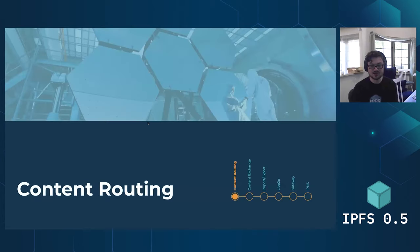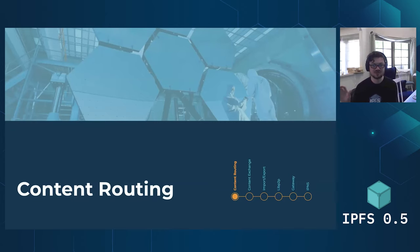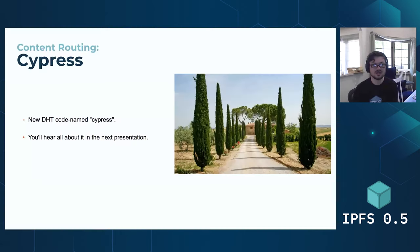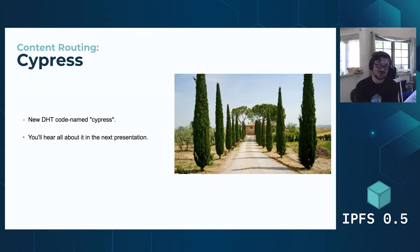First up, content routing. This was really the main focus of this release — to fix content routing and to make it so you could really quickly resolve content, because for a while on the IPFS network it was taking a while to actually find the content you're looking for. The main part of this endeavor was Cypress — this is the codename for our new DHT — but you'll hear all about it in the next presentation, so I won't talk about it too much here.